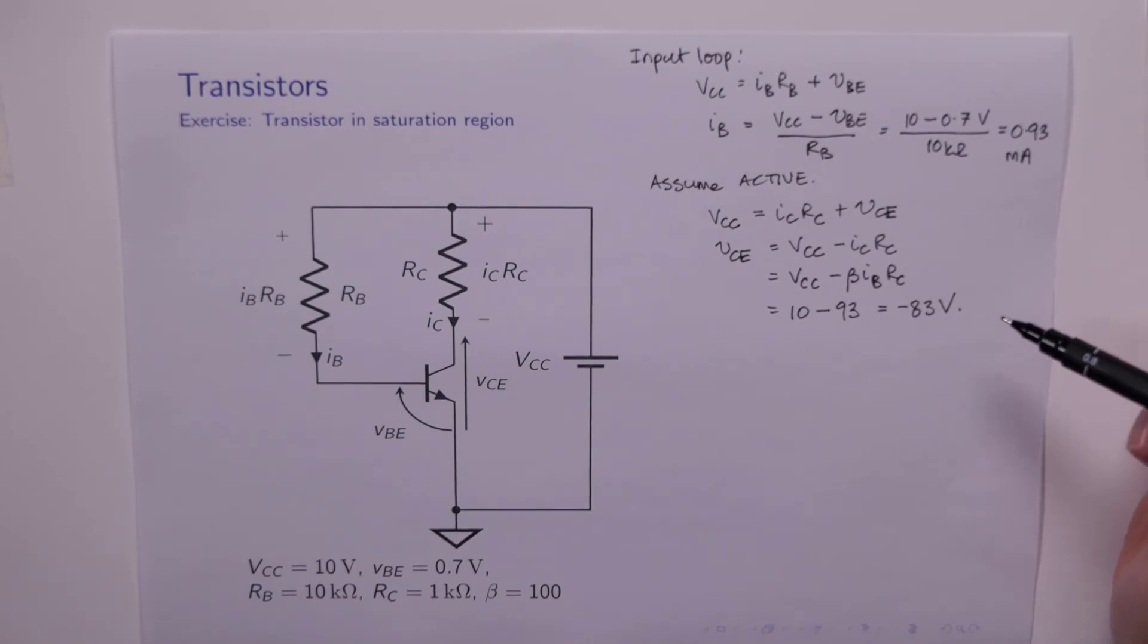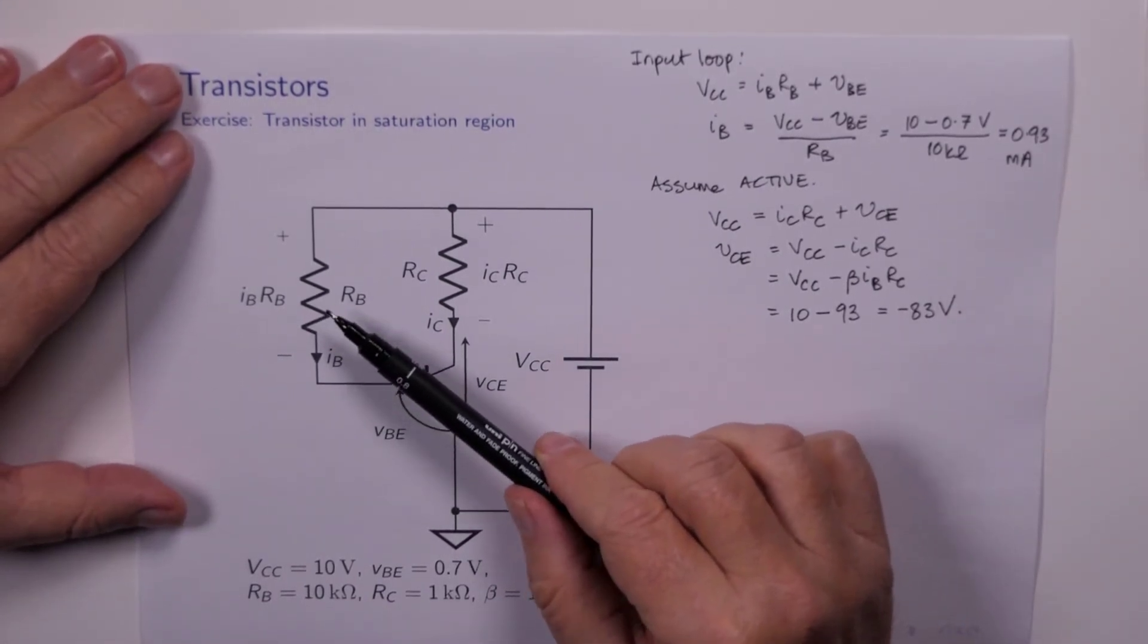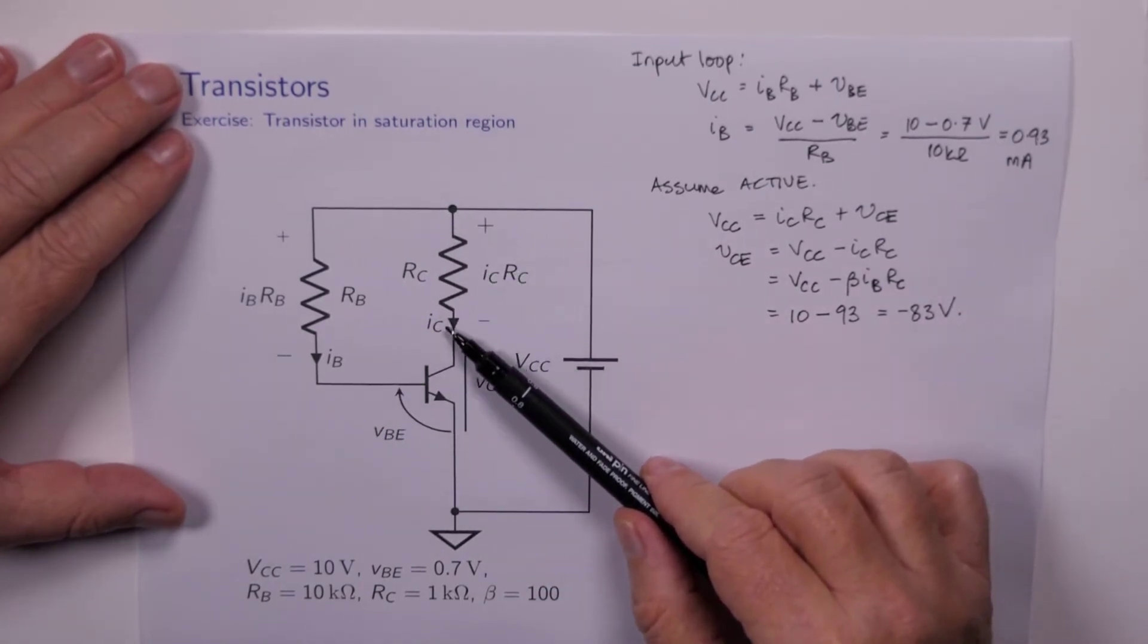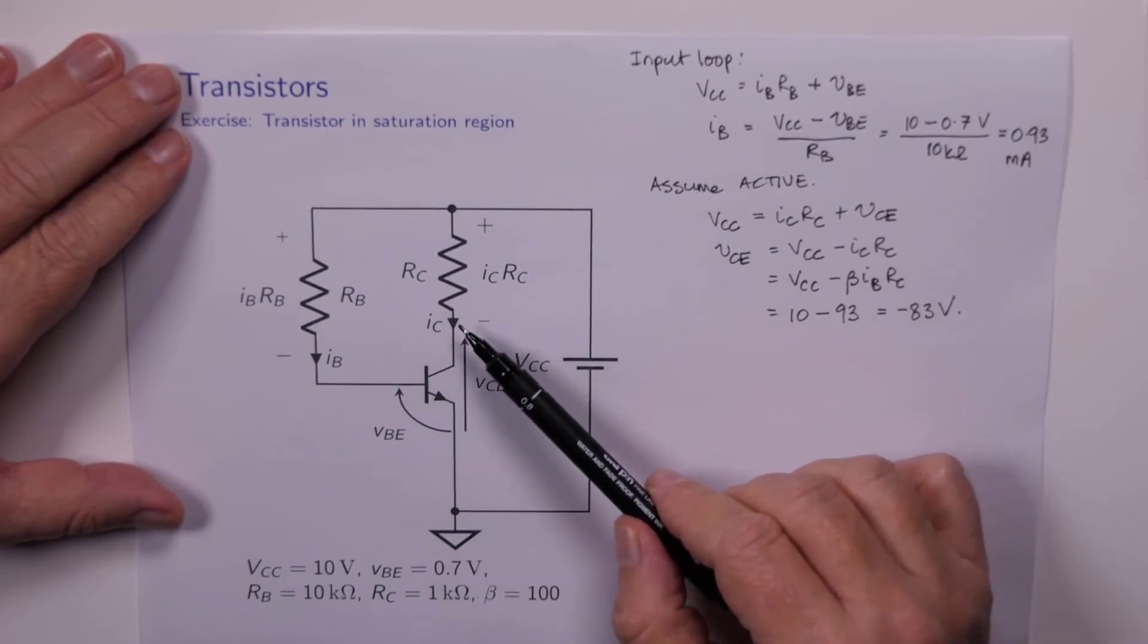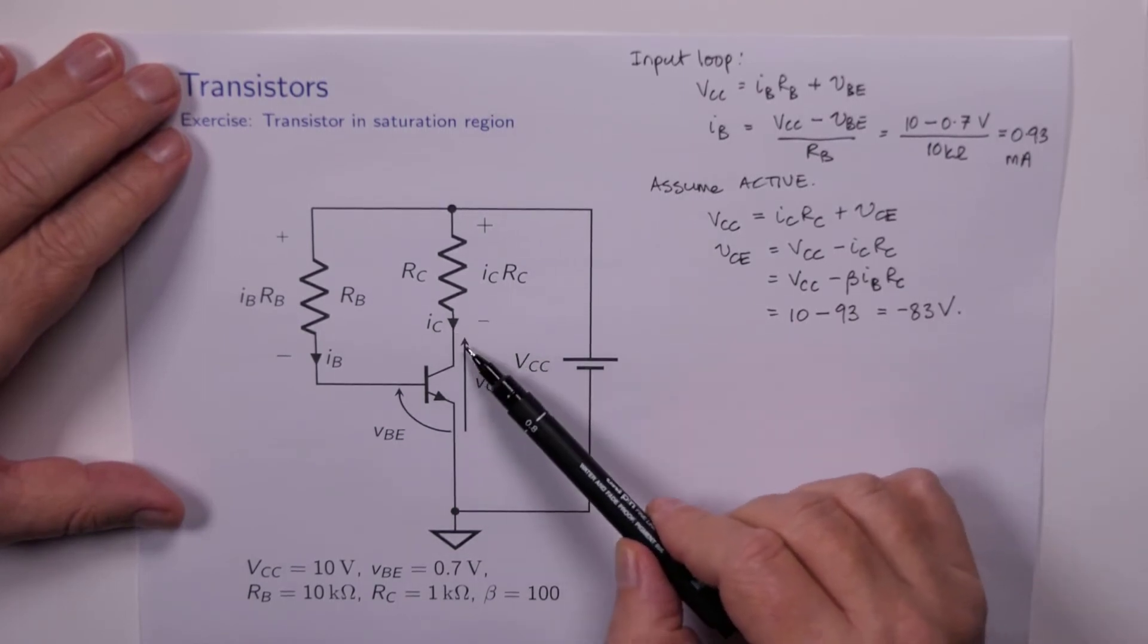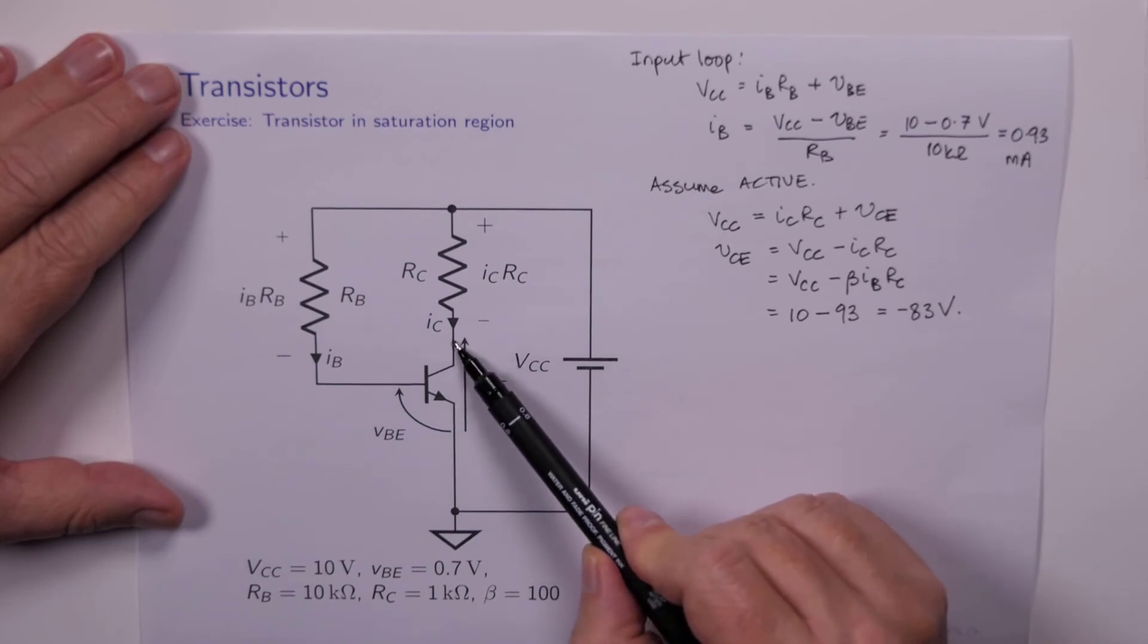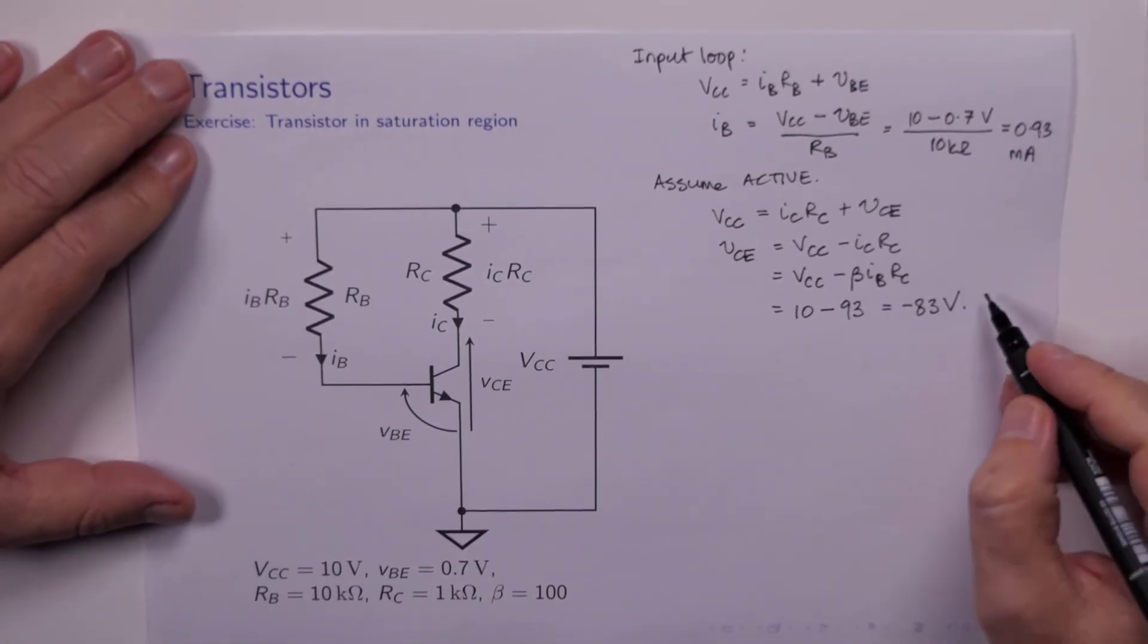And the reality is we can't. What's happened is that RB is too small, which is causing a very large base current to flow, which is trying to cause a very large collector current to flow. And as you know, when the collector current increases, VCE drops, but it can only drop as far as VCE sat. So the voltage here can only go down to 0.2 of a volt.